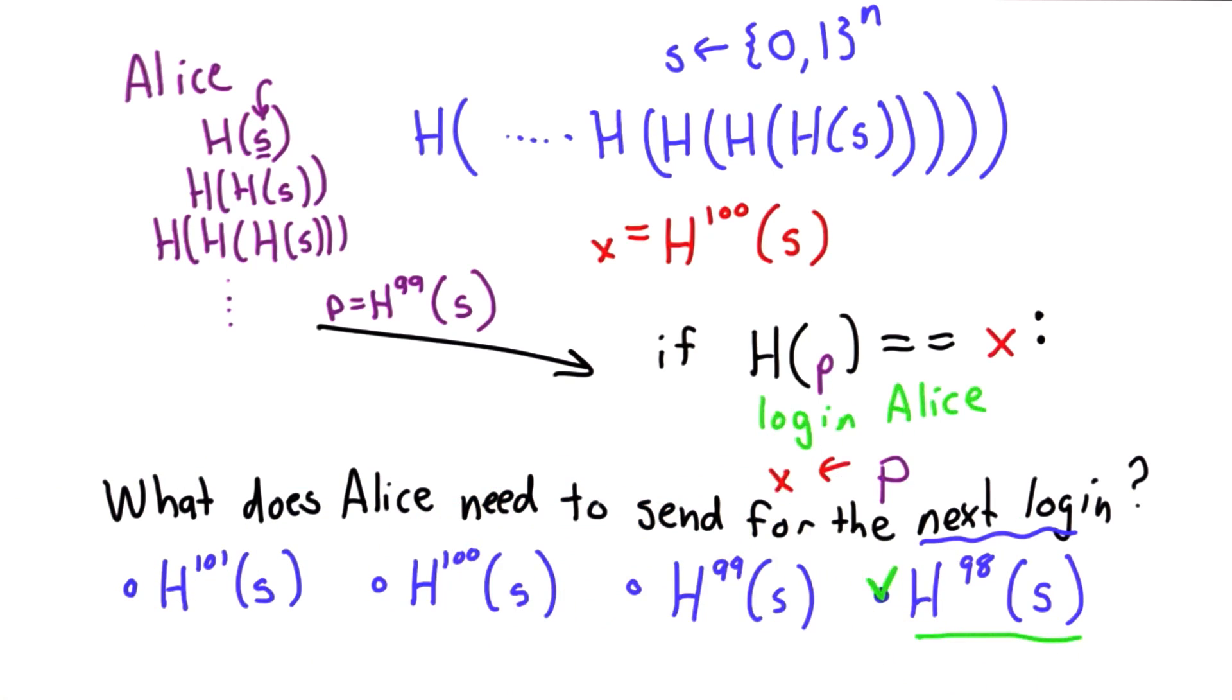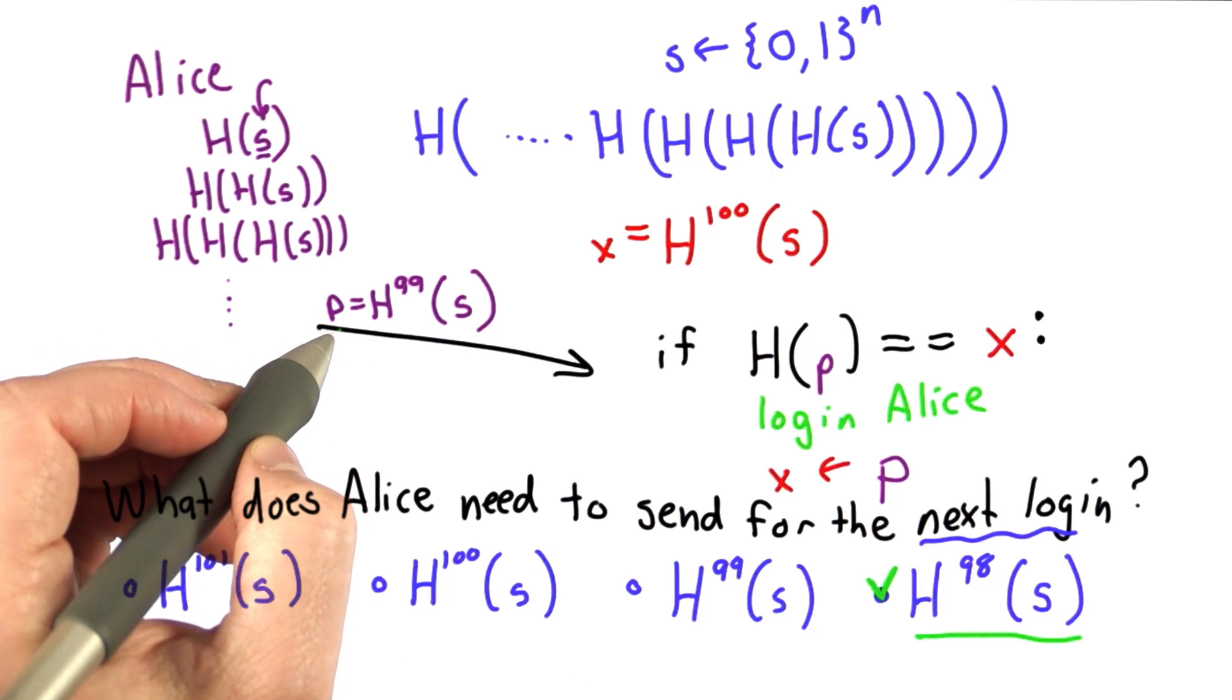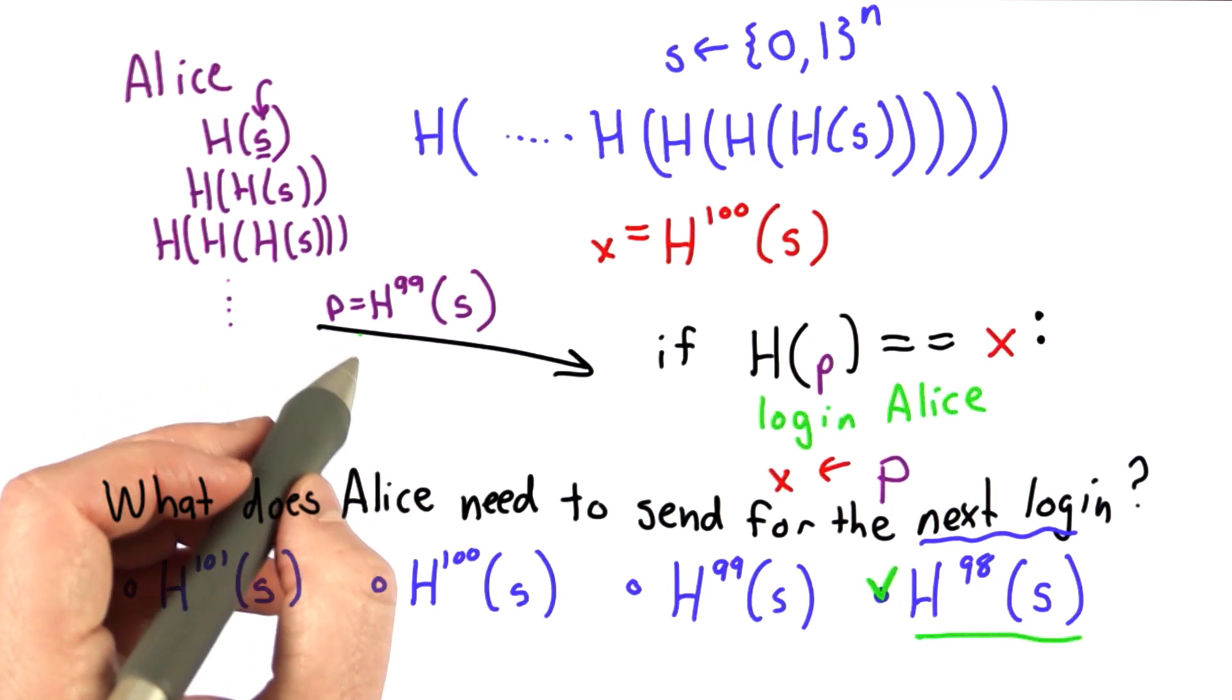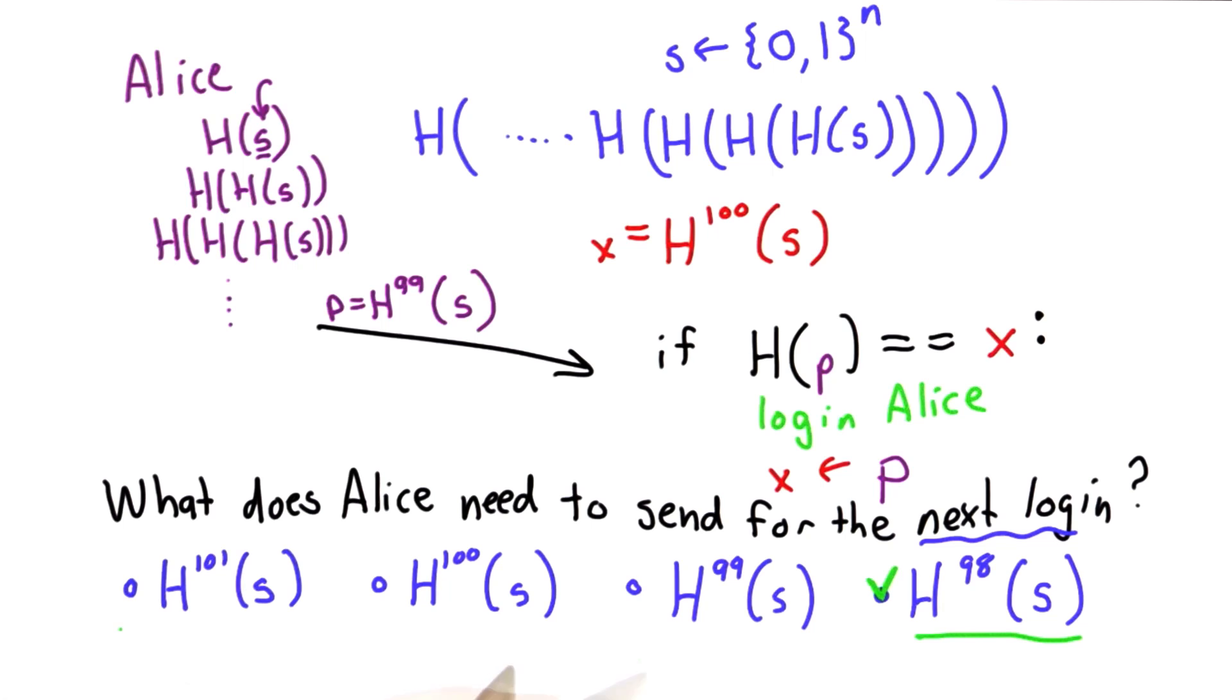If someone just knows x, if someone intercepts p, knows the previous password value, well, they could compute any of these other values. Those are easy to compute once you have p. Well, this was p. This one is just computing the hash of p, and this one is computing the hash of the hash of p. The only one that would be hard to compute is this one.